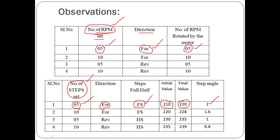With number of steps set to 10 in the forward full step direction, starting from 220, if it reaches 228 by the end, the step angle is 1.6 degrees. The same logic applies for reverse and half step modes. For half step, the step angle should be 1.8 divided by 2, which is 0.9 degrees. The expected step angle is 360 degrees divided by 200 steps, giving exactly 1.8 degrees.